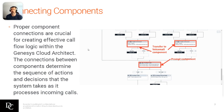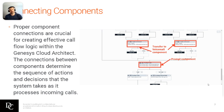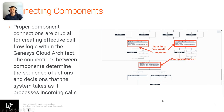Proper component connections are crucial for creating effective call flow logic within Genesys Cloud Architect. Those connections between components determine the sequence of actions and decisions that the system takes as it processes incoming calls. The example shown here is a simple transfer-to-voicemail greeting prompt. You can see a schedule group — during open hours it bypasses everything else and goes down into the greeting prompt, with variables set for the greeting prompt. If it's closed or a holiday, maybe we're going to transfer to the support queue's voicemail, which then gets back into queue and the next person who gets on queue will receive that voicemail.